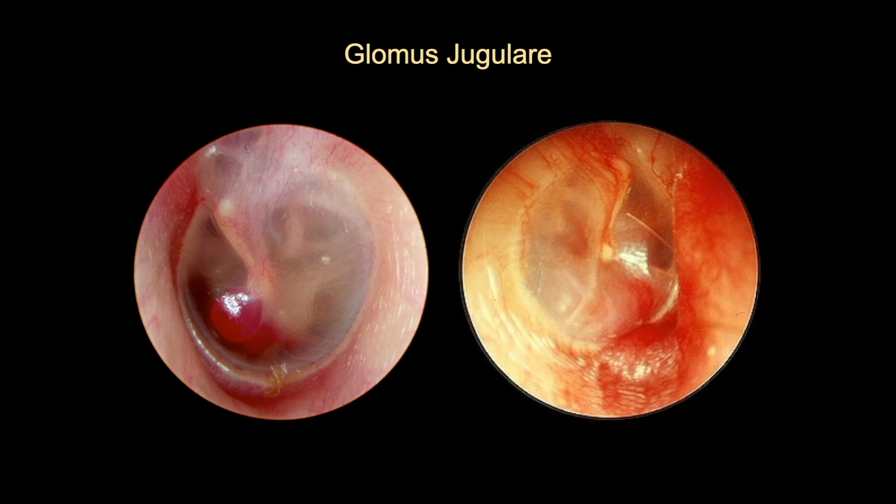Glomus jugular are highly vascular tumours arising from the ear. Knowing the anatomy will help you understand these tumours better.